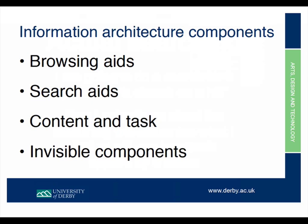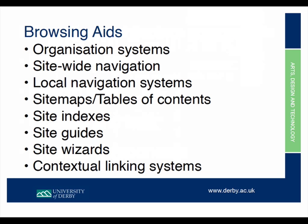Within any structure there are different components to help people find where they are or to navigate. These are browsing aids, search aids, content and tasks, and invisible components. The first — browsing aids — includes organizational systems and site-wide navigation. When you go into a first page and have 'home, photographs, commissions, awards, me' as categories, those same items will appear on every single page. Then on a particular page you might have local navigation — for example, an animals page might have subcategories you click on to reach one picture.